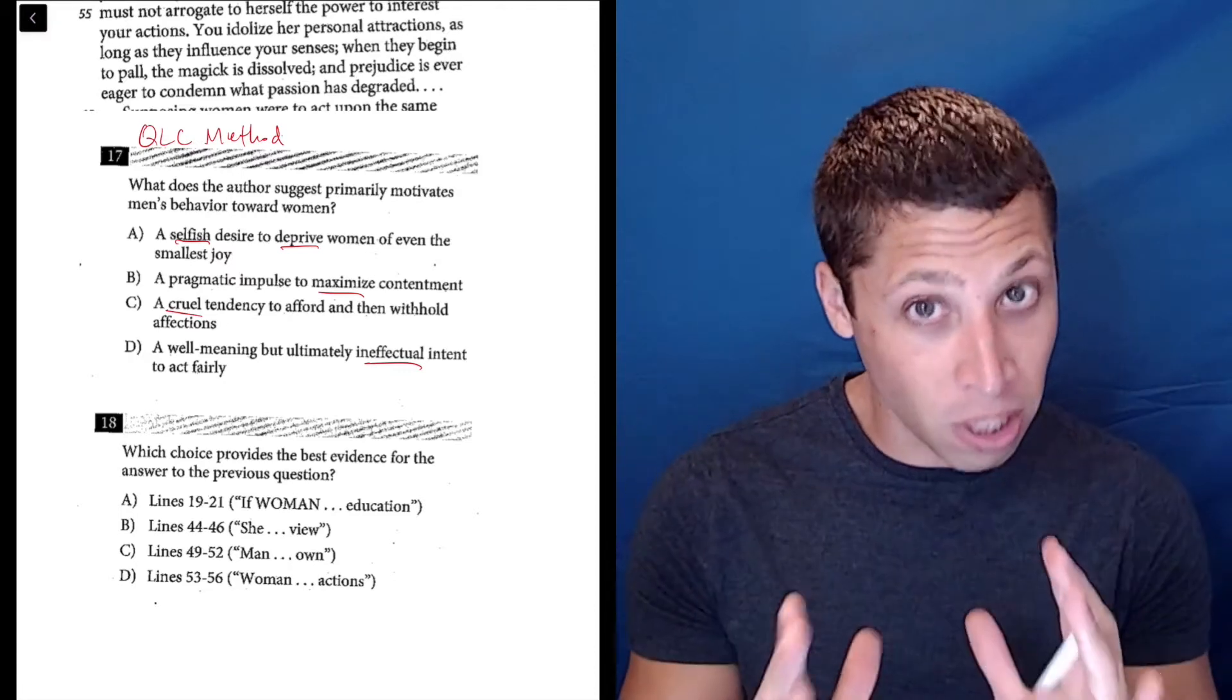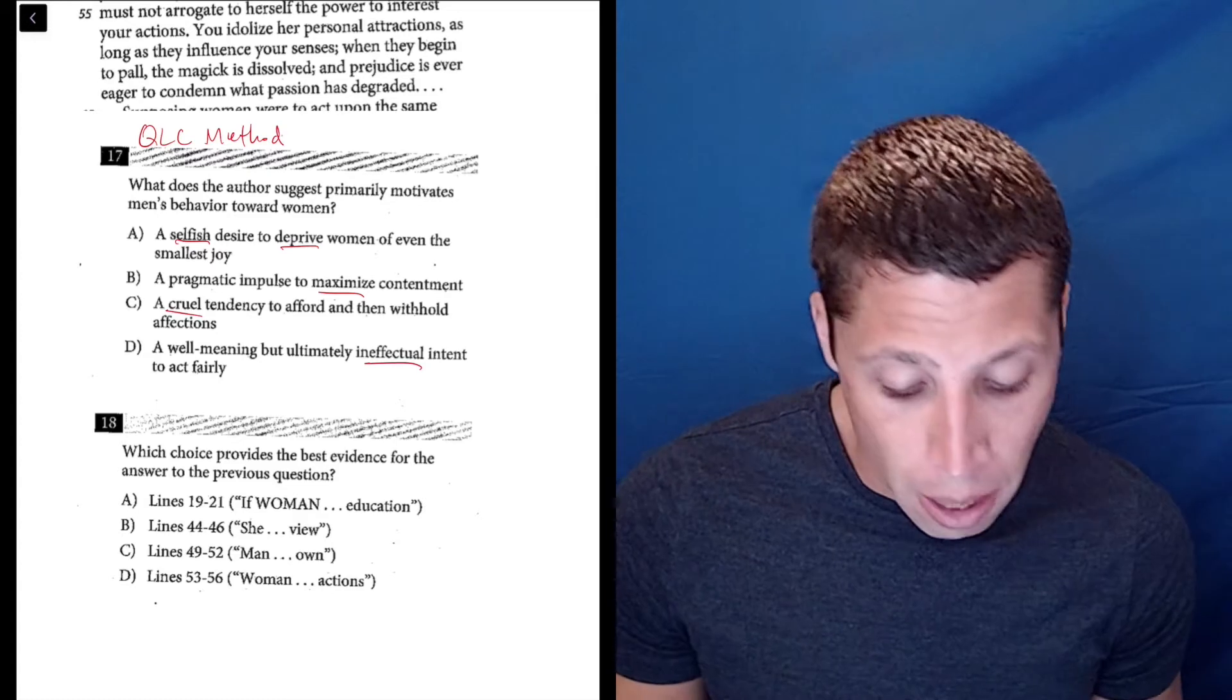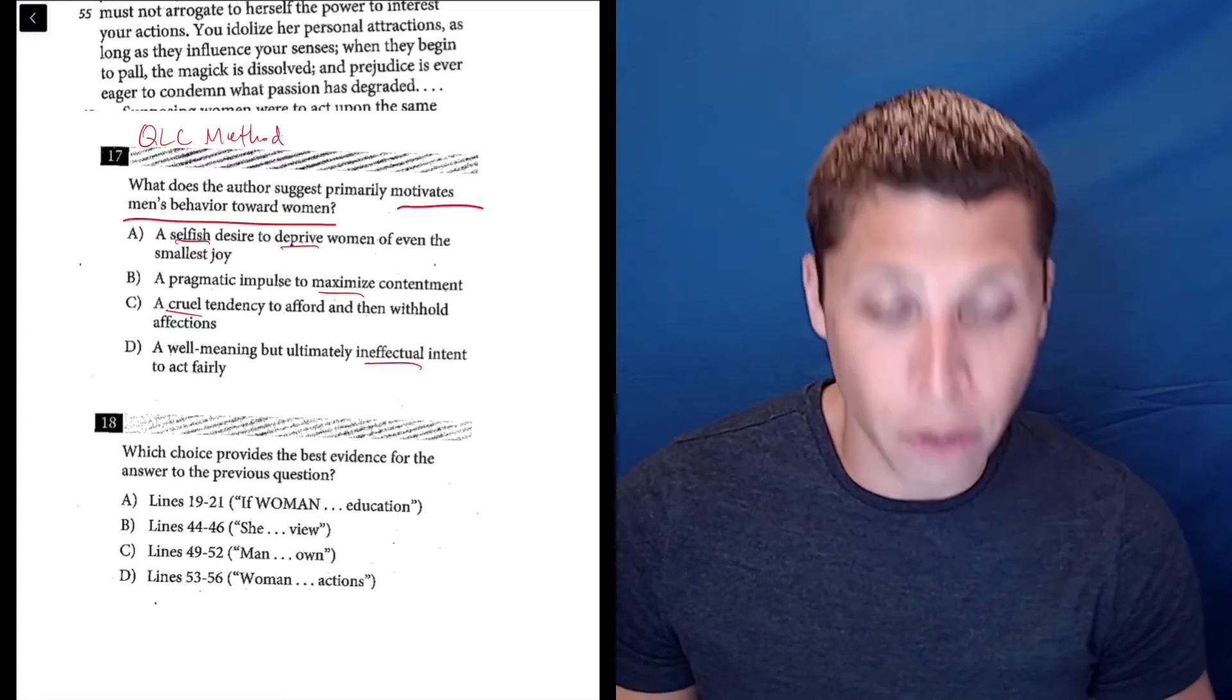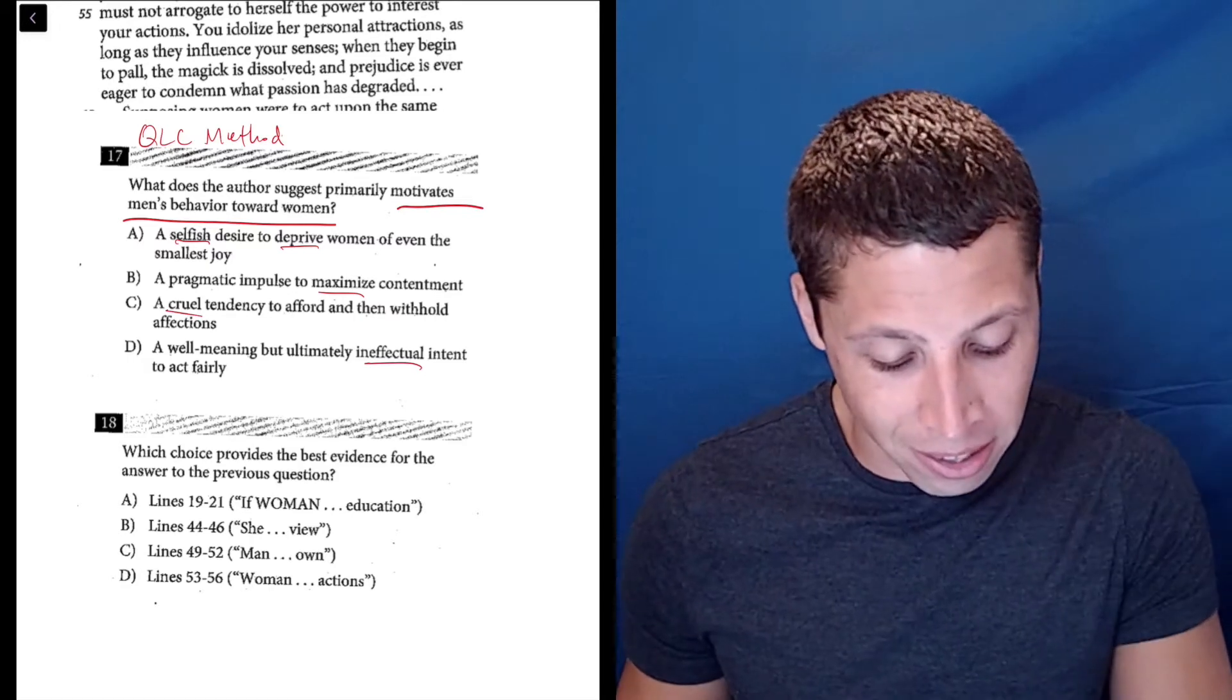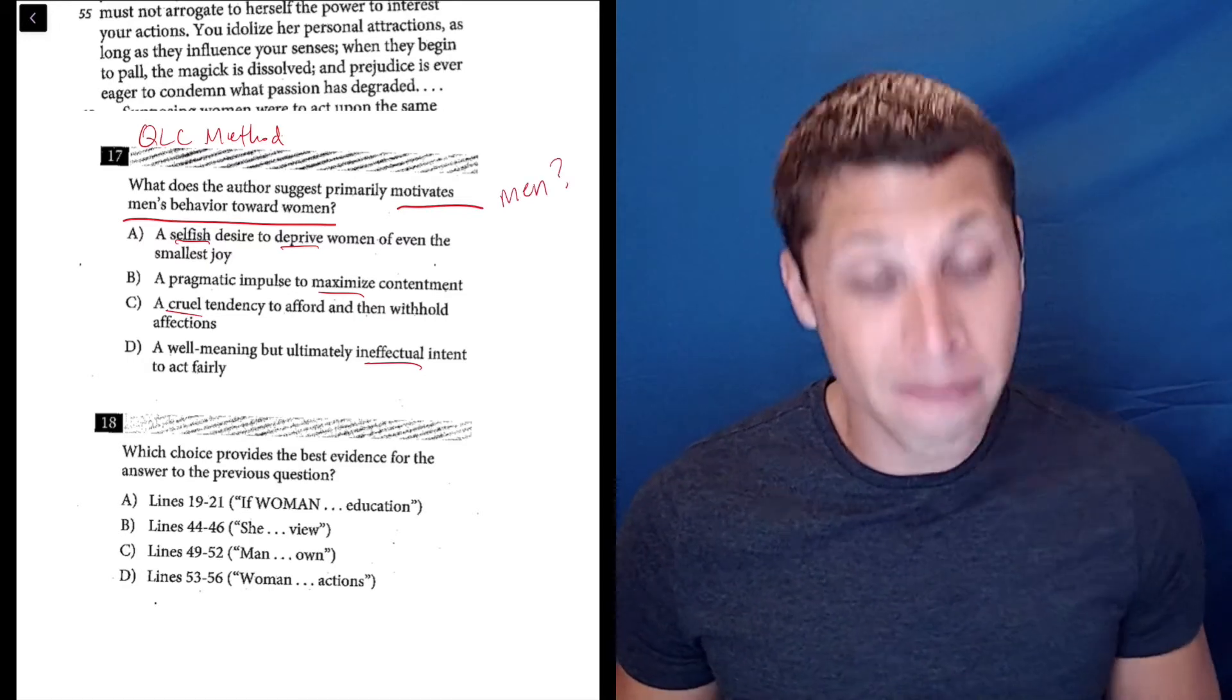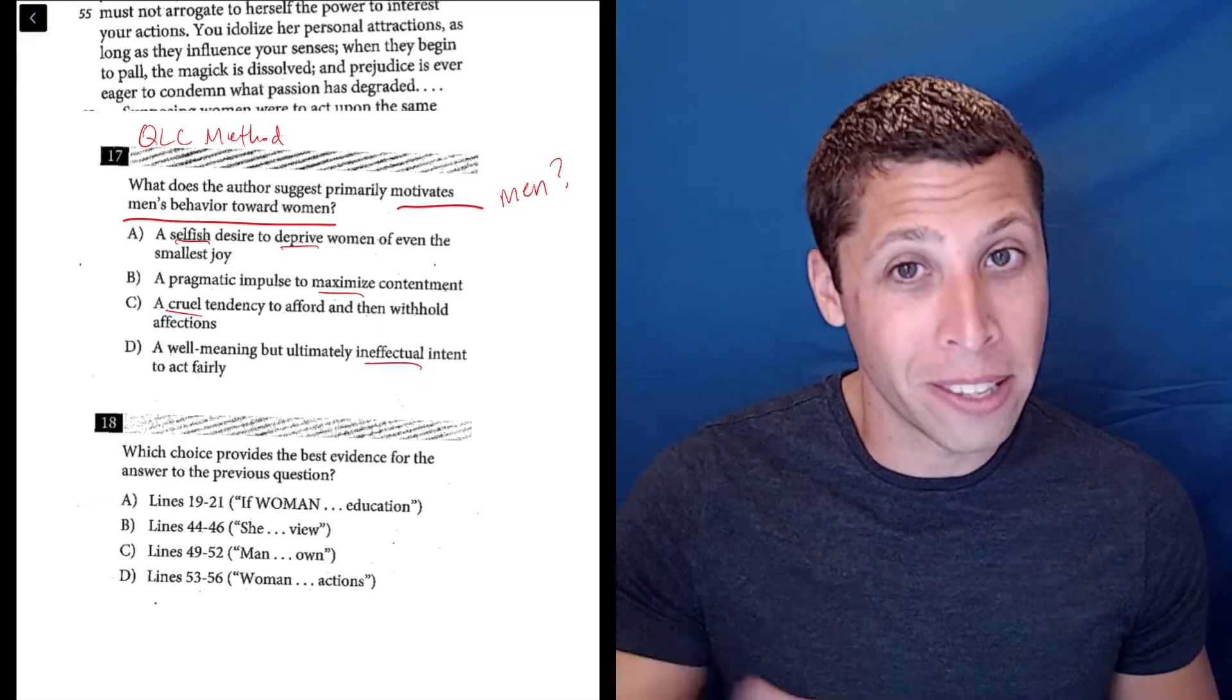We still need to find evidence of anything that's in the choices in the lines. We need to make matches, but it just goes to show that the SAT does weird stuff sometimes and our normal expectations get subverted. The first thing we want to do is make sure we understand the question: What does the author suggest primarily motivates men's behavior towards women? This is a question that's mostly about the men maybe, not so much about the women.